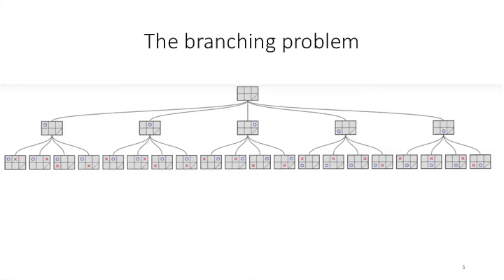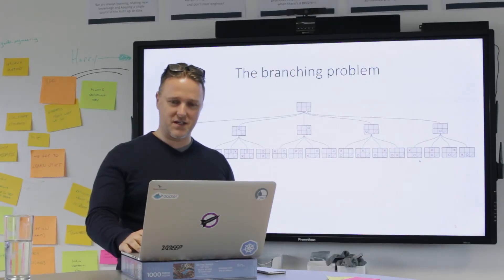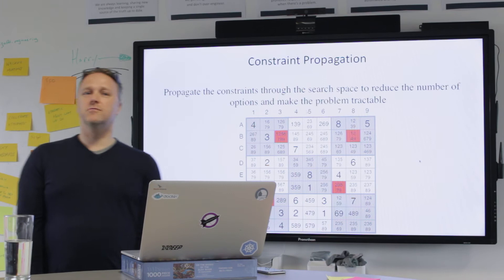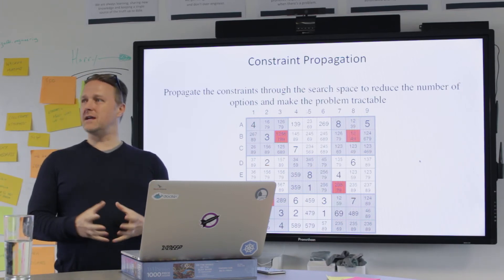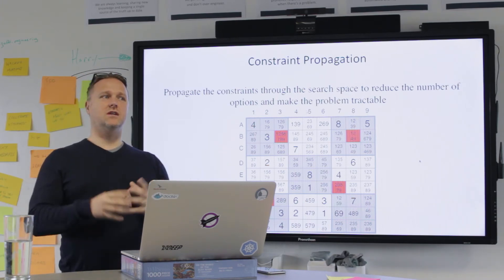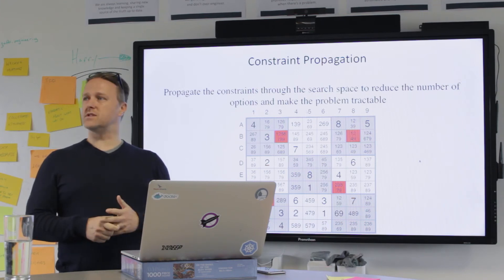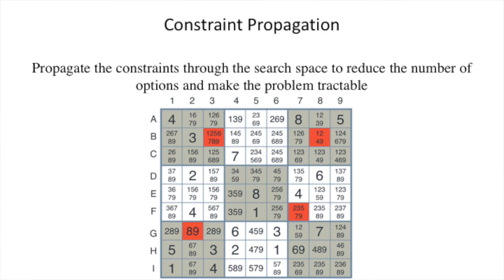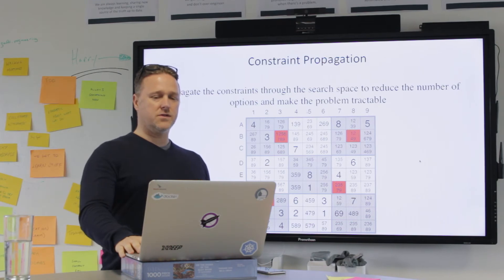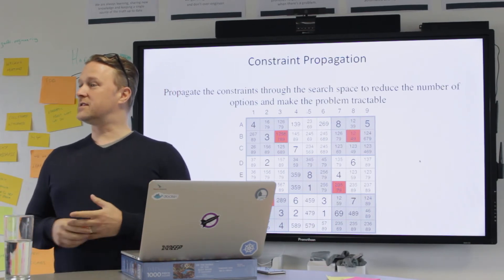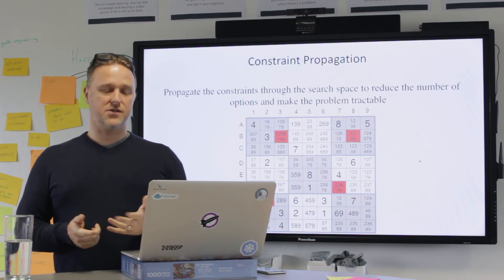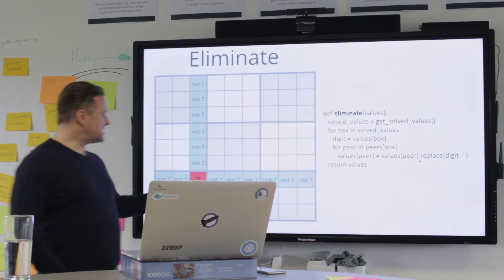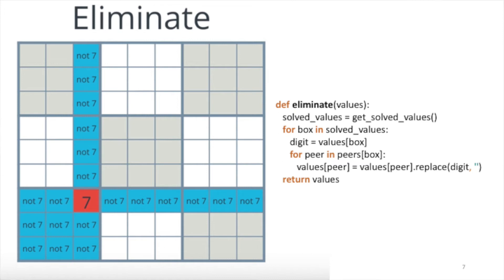But the problem is that we're faced with this massively branching problem, which would just take probably millions of years to solve. So this is where constraint propagation comes in. We use the constraints to make the search space smaller, to reduce the size of options, the number of options that we've got to consider and therefore make the problem tractable, whereas before it was intractable. And the strategies that you use will be specific to the domain that you're working in. And in Sudoku, we've got things like, well, if you've got a seven in this box, then none of these other things can be seven.